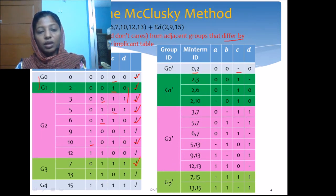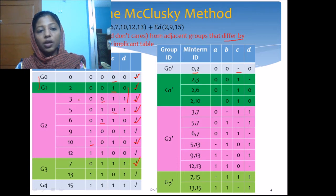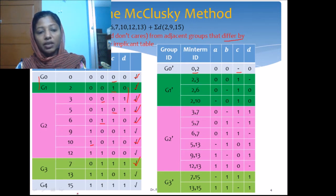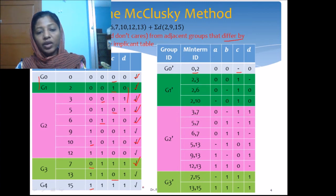We need to be a little careful here — we must compare elements of each group with the adjacent group and find minterms varying by only one bit. For example, 7 and 15 differ only in A, forming a new group 7,15. Similarly, 13 and 15 differ only in bit C, so whichever bit is varying appears as a dash in the new prime implicant table.